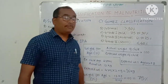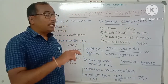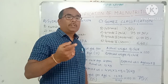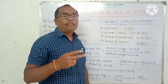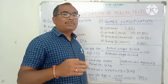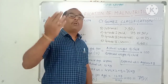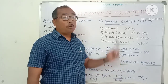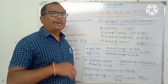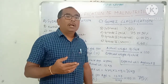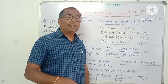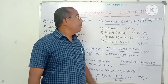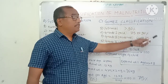Broadly, malnutrition is classified into undernutrition and overnutrition. Overnutrition means when a person consumes more amount of nutrients than the body requirement. If a person consumes less amount of nutrients than the body requirement, it is said to be undernutrition.